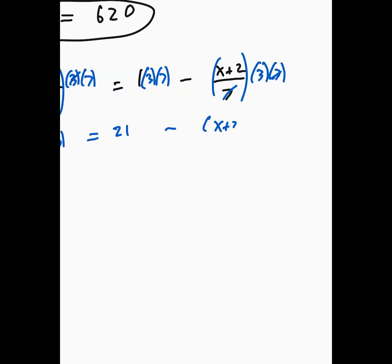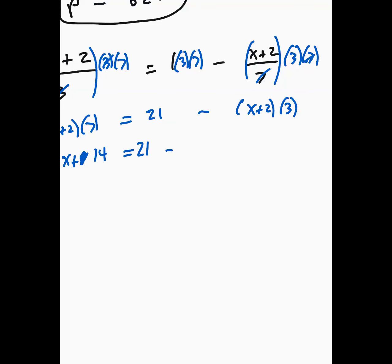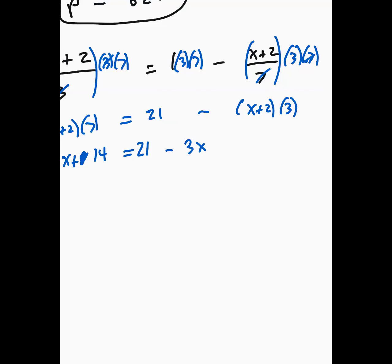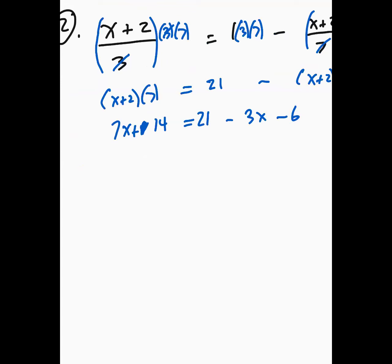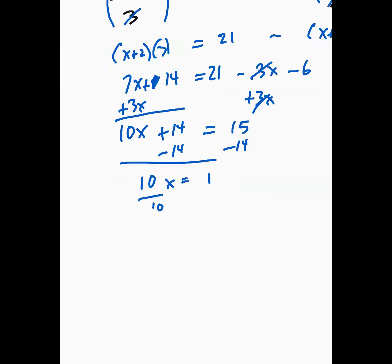So I get 7x plus 14 equals 21 minus 3x minus 6. I'm going to add 3x to both sides, so I'll get 10x plus 14 equals 15. Then I'll subtract 14 from both sides: 10x equals 1. So that is the solution to that problem.